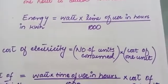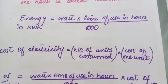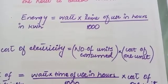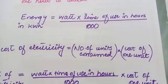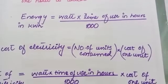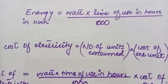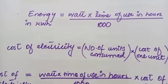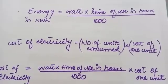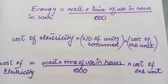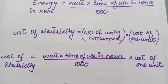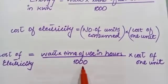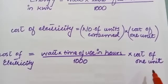The electric meter installed in our houses measures the consumption of electrical energy in units of kilowatt-hours, according to which we pay our electricity bills. If the cost of one kilowatt-hour (one unit) is known, we can calculate the electricity bill using the formula: Cost of electricity = [Power (watts) × time of use (hours) / 1000] × cost of one unit.